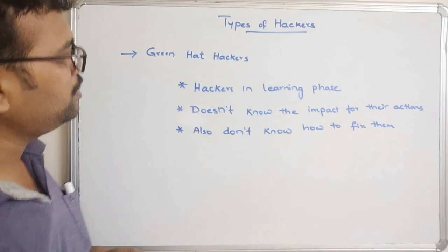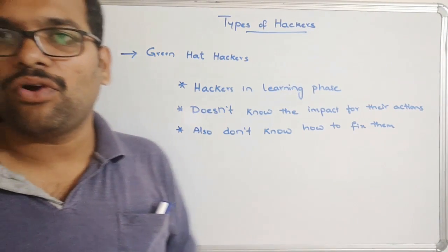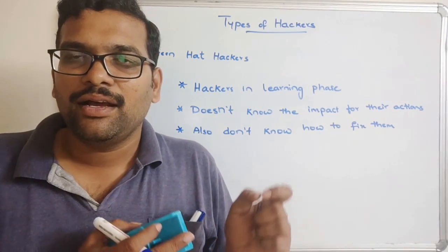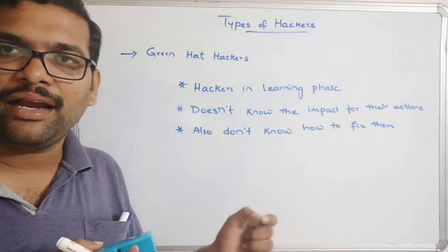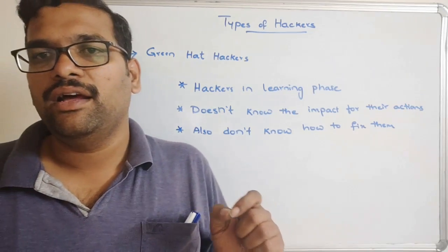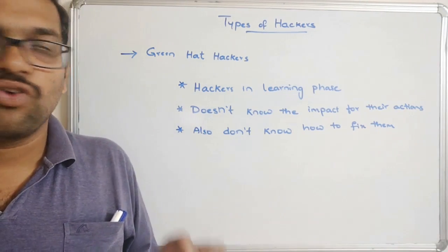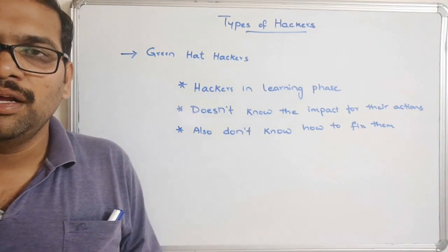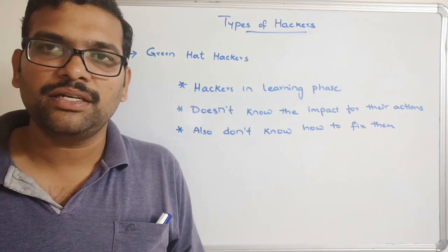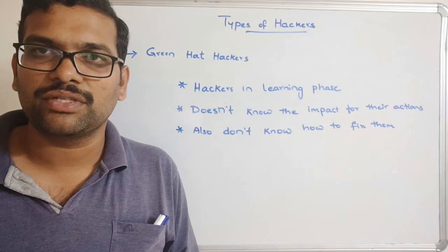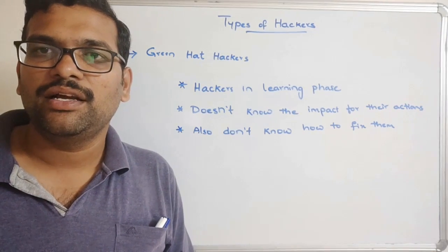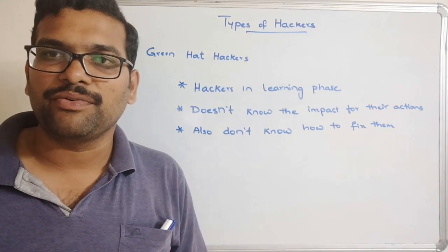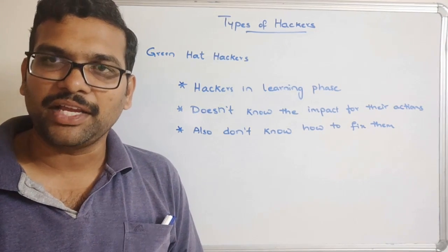Hope you understood. These are the major categories of hackers: black hat, white hat, gray hat, red, blue, and green hat hackers. If you have any doubts, feel free to post them in the comment section — I will try to clarify all your doubts. If you enjoyed my session, like and share it with your friends, and don't forget to subscribe to our channel. Thanks for watching.